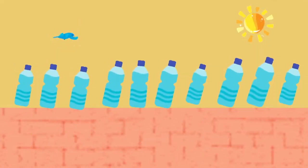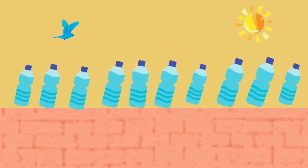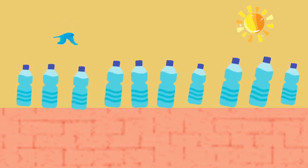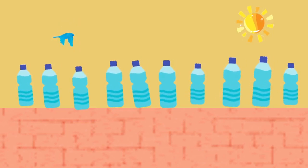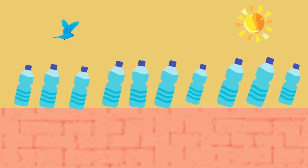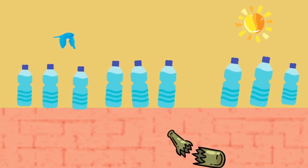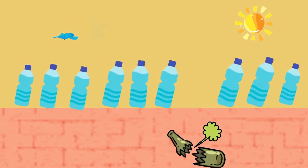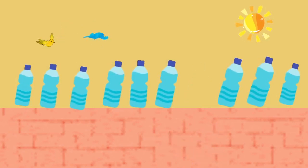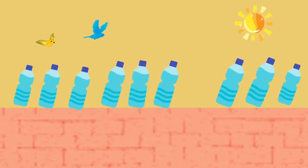Ten green bottles sitting on the wall, ten green bottles sitting on the wall. And if one green bottle should accidentally fall, there'll be nine green bottles sitting on the wall.